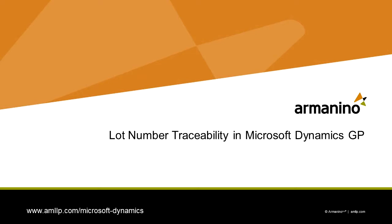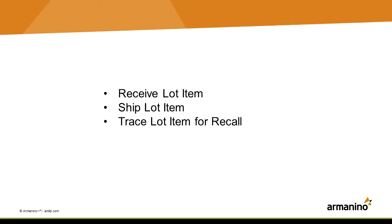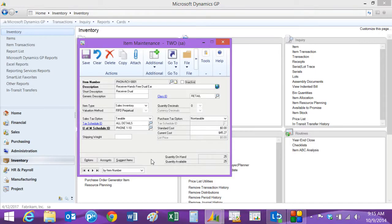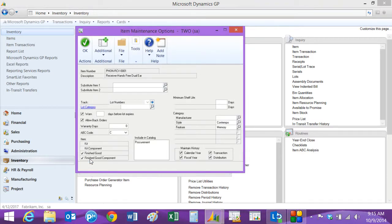Let's take a look at how you can control items with lot numbers in Dynamics GP. We'll also take a look at how you can trace the receipt through the shipment of those same items. So let's start with a lot controlled item. If you go to the options tab, you can see that the item tracking is set to lot numbers.